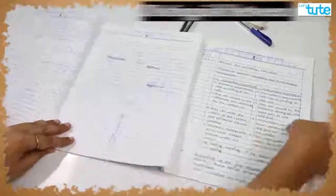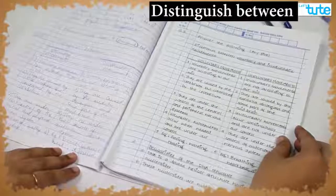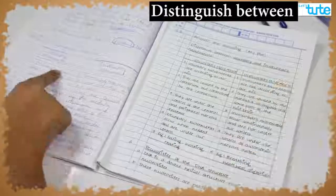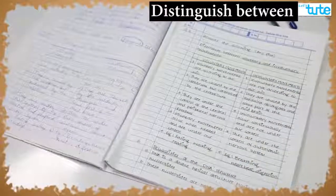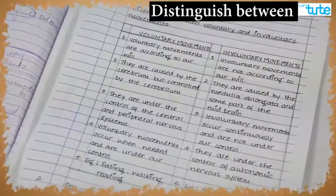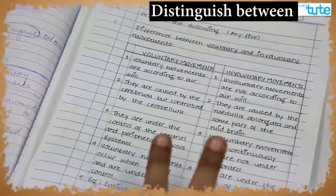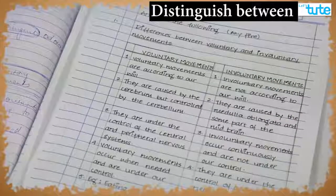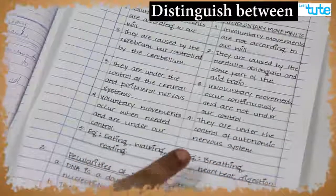Now, if there is a question on distinguish or difference between two things, you may write it this way by making two different columns. And for two marks, write at least four points. Also, try giving examples.